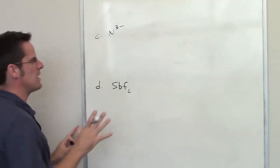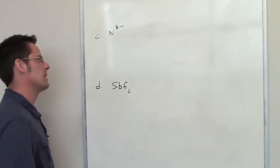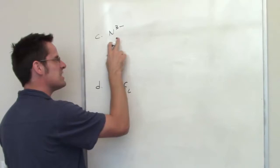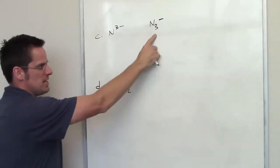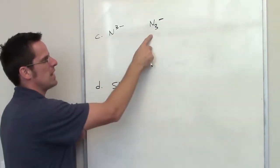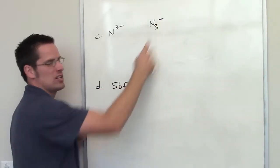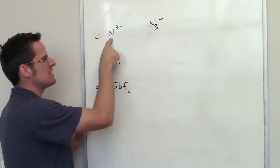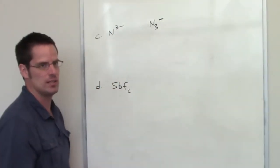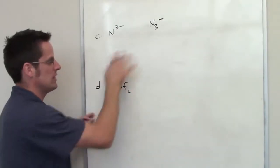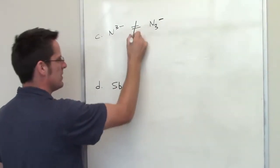This one right here is N3-. This might have been a typo on my part. I want you to note that this is not the same thing as this. This is three different atoms of nitrogen bonded together with one extra electron in the system. This is a single atom of nitrogen that has three electrons added to it. Hopefully that makes sense, that these are different. So these are not the same.